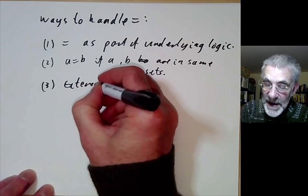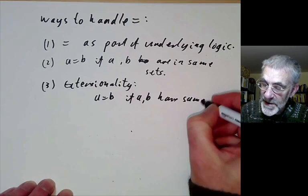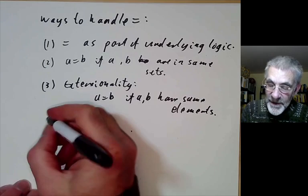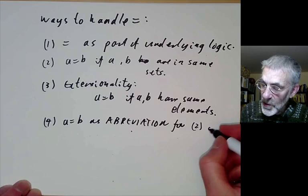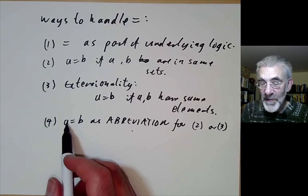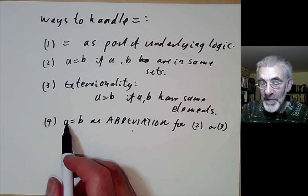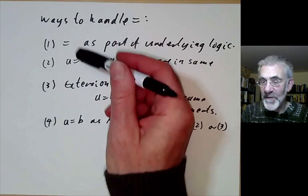And thirdly, you could use extensionality where we can define A to be equal to B if A and B have the same elements. And fourthly, we could think of A equals B as an abbreviation for item 2 or item 3. So we would not really have a symbol for equality at all. Whenever we saw a formula with A equals B, we would know this was just an abbreviation for some formula expressing definition 2 or definition 3.